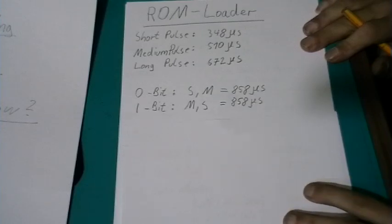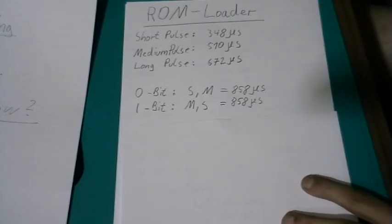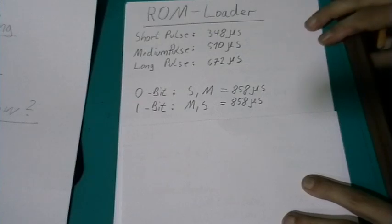So with these pulses, a zero and a one bit can be written. A zero bit is represented by a short pulse followed by a medium pulse. And a one bit is represented by a medium pulse followed by a short pulse. So the length for one bit is 858 microseconds.